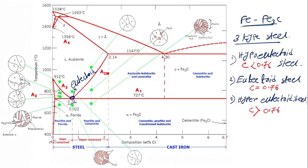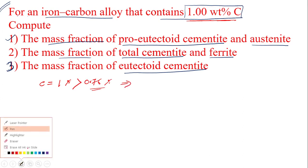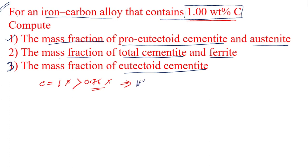Now if we look at the diagram, the eutectoid point is at 0.76. The zone on the left-hand side is hypo-eutectoid steel, and the right-hand side zone is hyper-eutectoid steel. Our given carbon percentage is 1%, which is greater than 0.76, so the given steel is hyper-eutectoid steel. This is the first thing you have to understand.